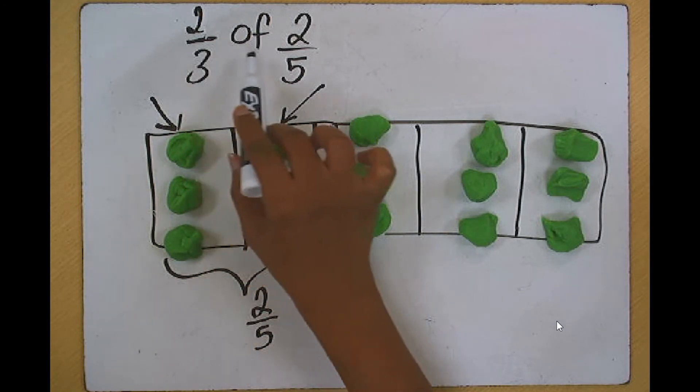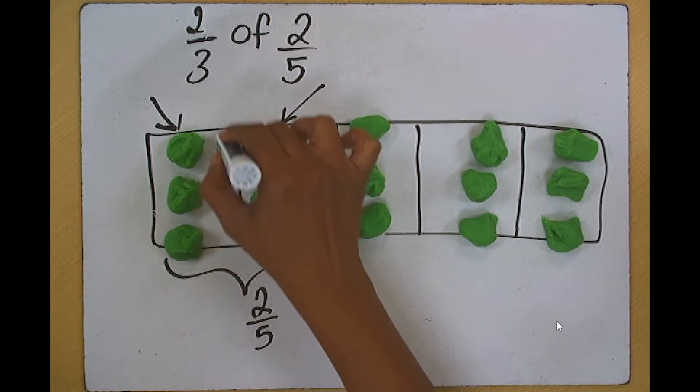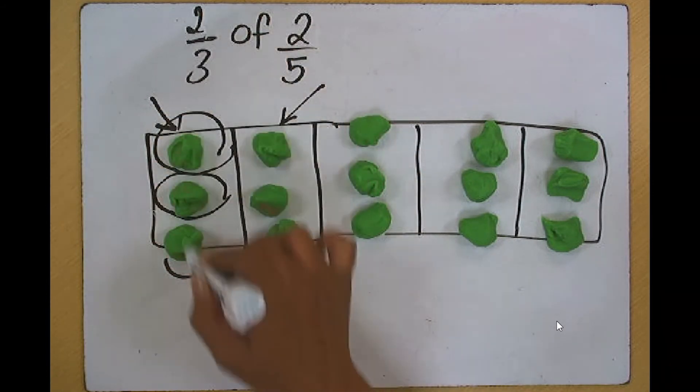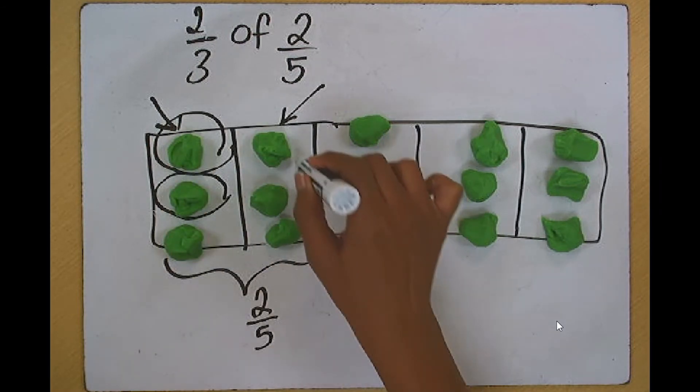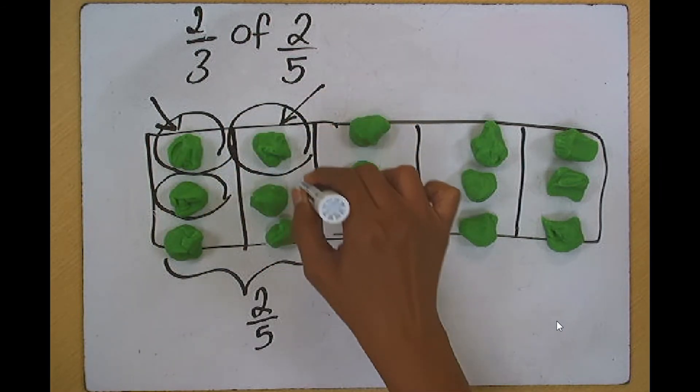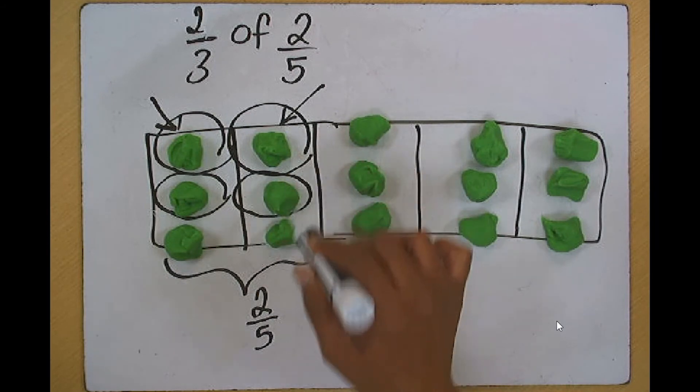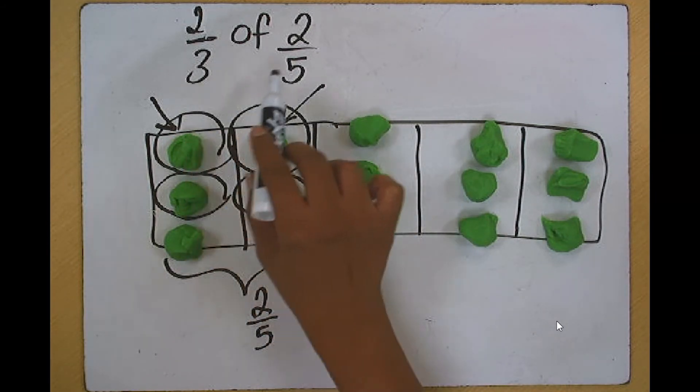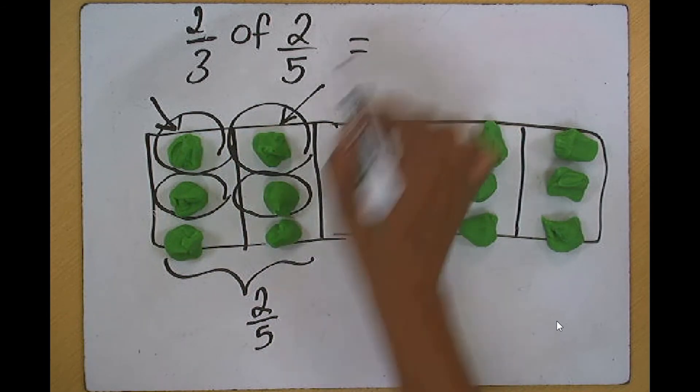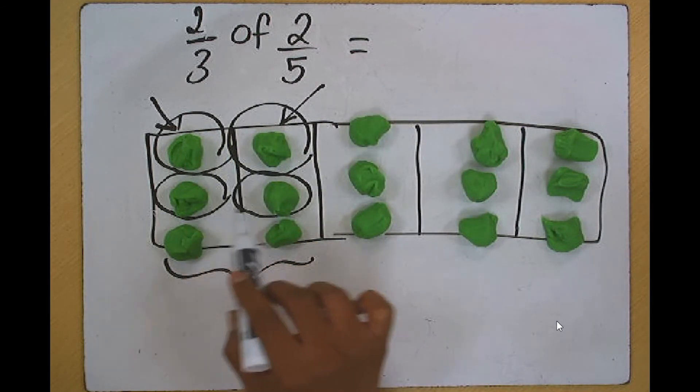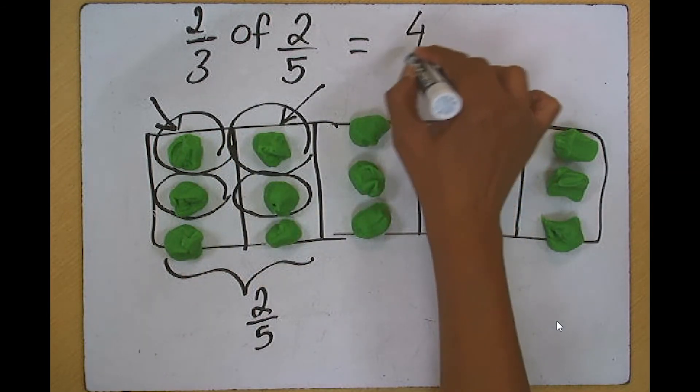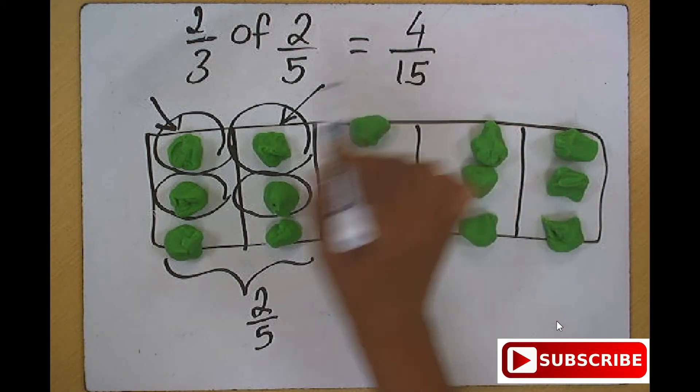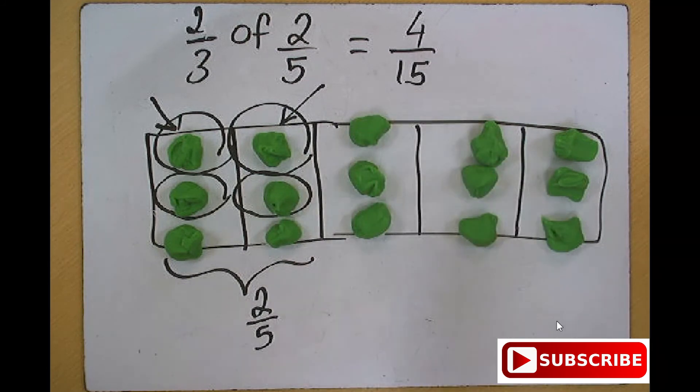So this is our one-third. This is another one-third from just this one segment alone. We do the same thing for here. One-third and another one-third from this segment. Now you can see two-thirds of two-fifths is nothing but one, two, three, four pieces out of the 15 total pieces that we have. Two-thirds of two-fifths is four-fifteenths.